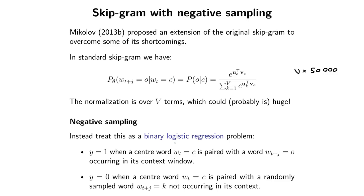You change the problem into a binary logistic regression task. The basic idea is that you train a model which doesn't give you the probability of a context word given a center word. Instead, you train a model that outputs ones and zeros. You want the model to output a high value — a probability close to one — when the center word is paired with some context word occurring in its context window. And you want the same model to output a value close to zero when the center word C is paired with a randomly sampled word K that doesn't occur in this context window.